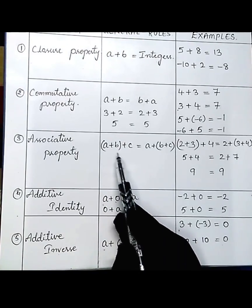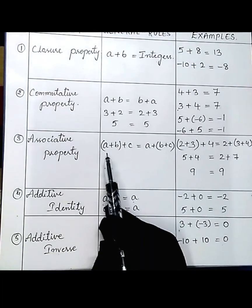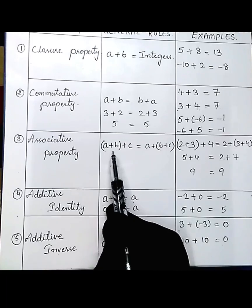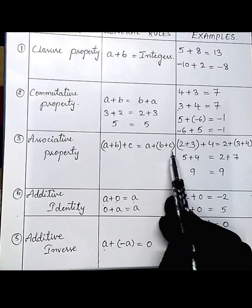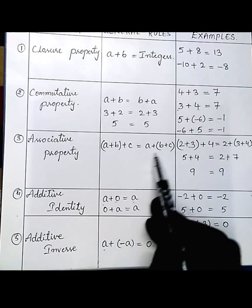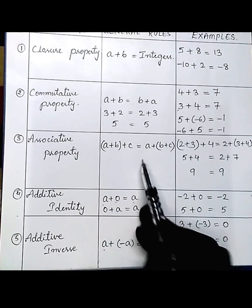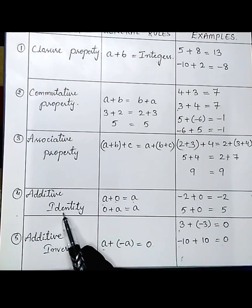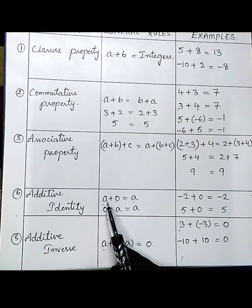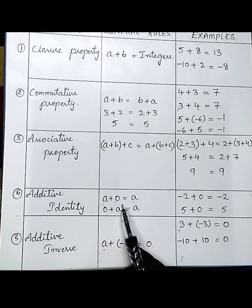Next is associative property: if three integers a, b, and c are there, adding a plus b first and then c gives the same result as adding b plus c first and then adding a.